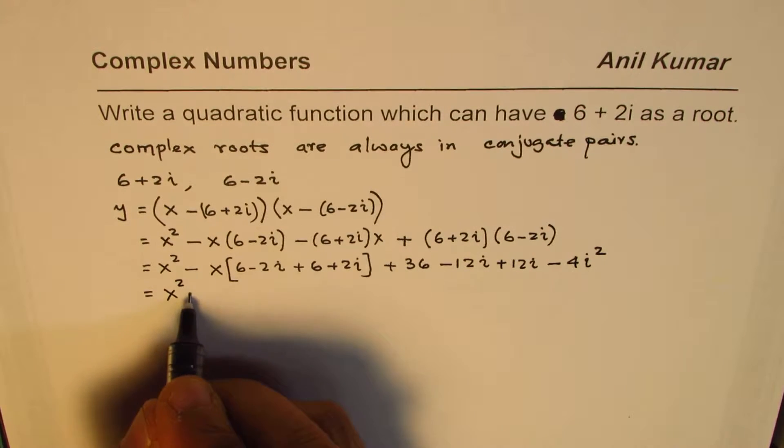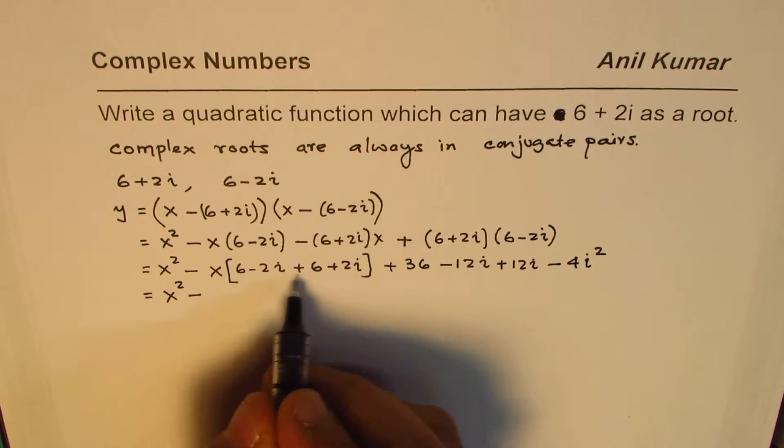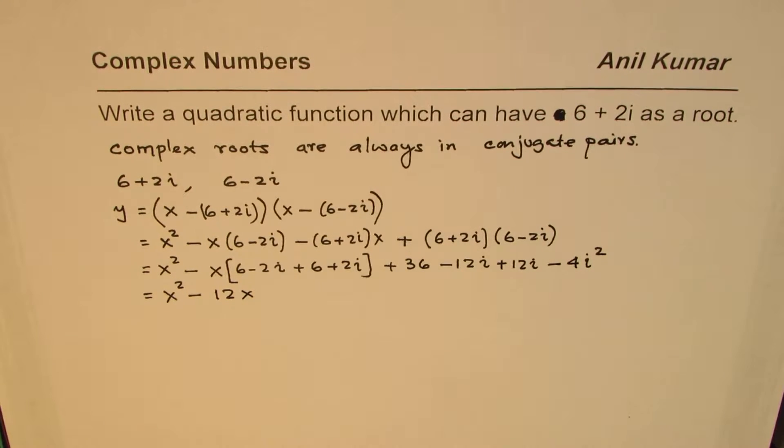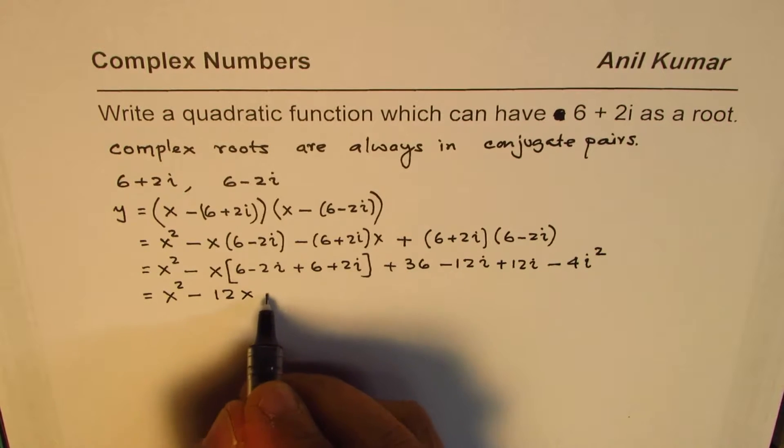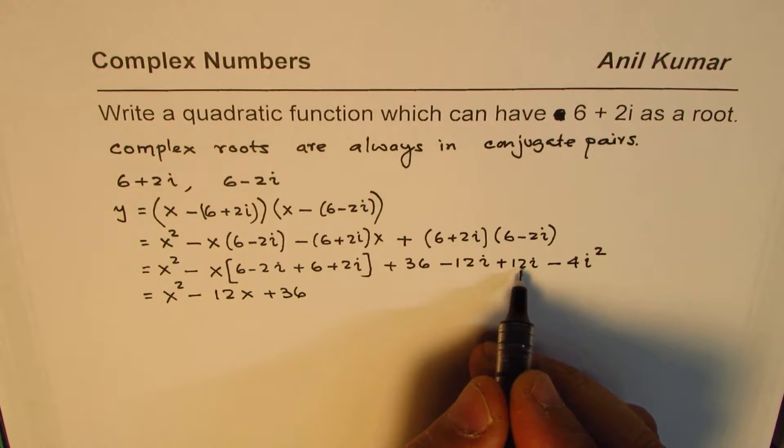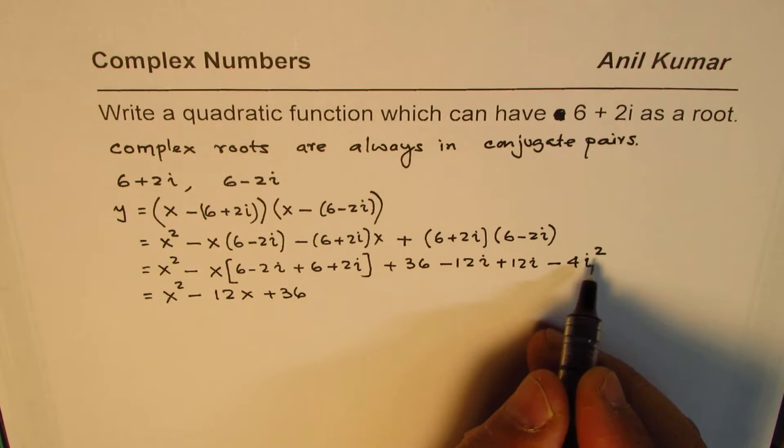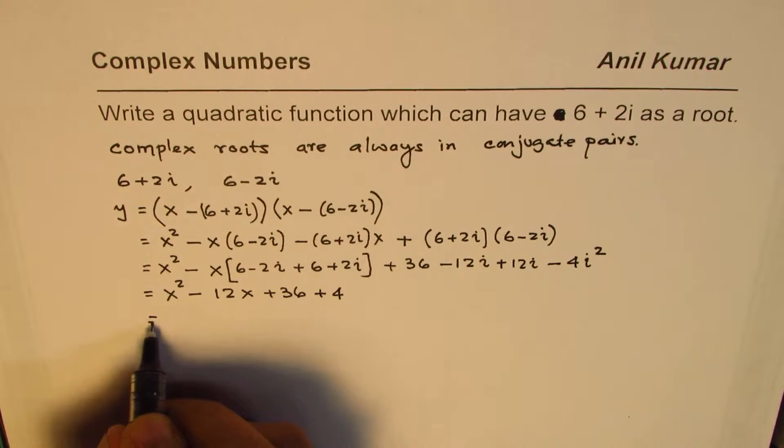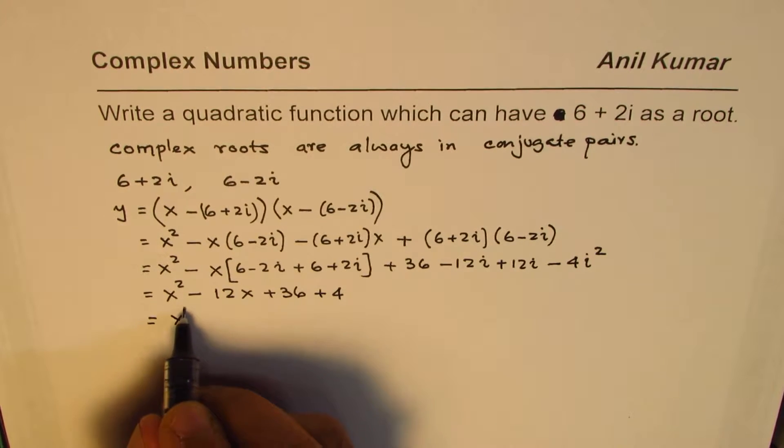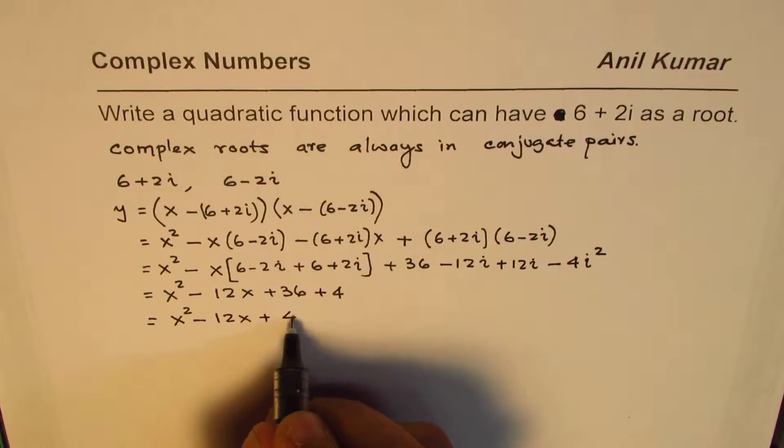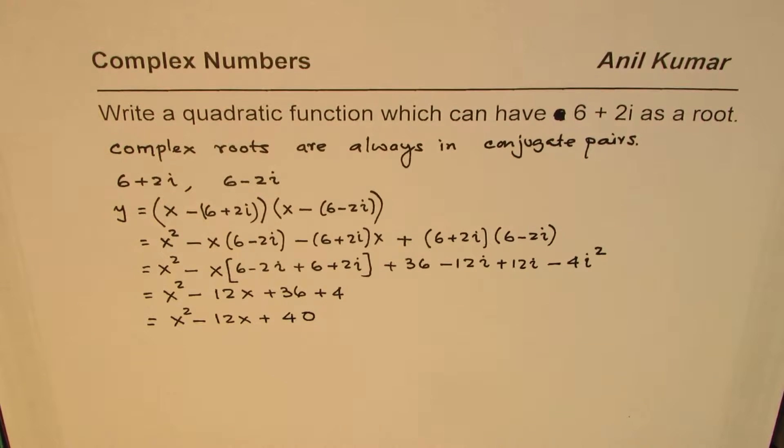Now, let us expand this. Combining these terms, we get 6 plus 6 is 12. So, we get 12x minus 2i plus 2i cancel. Plus 36. Minus 12i plus 12i cancel. So, we get 0 here. i square is negative 1. So, we get plus 4. And that gives us the equation x square minus 12x plus 40. Correct? So, that is one method of finding the equation.